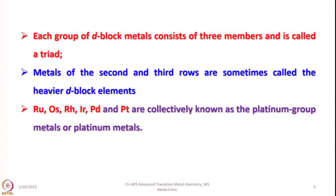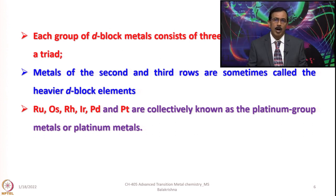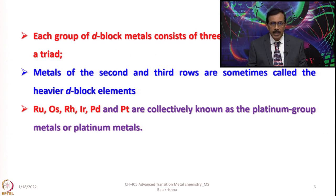When we look into the D block, we have three series: 3D, 4D, and 5D. Each group of D block metals consists of 3 members and is called a triad. For example, chromium, molybdenum, and tungsten; or nickel, palladium, and platinum; or copper, silver, and gold; or cobalt, rhodium, and iridium. Metals of the second and third row are sometimes called the heavier D block elements.